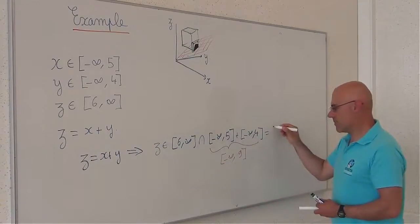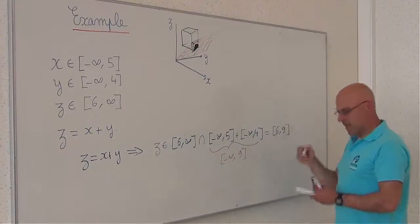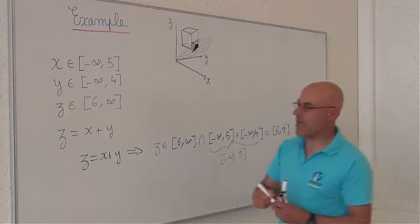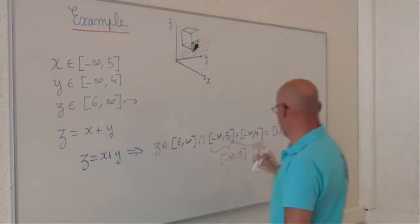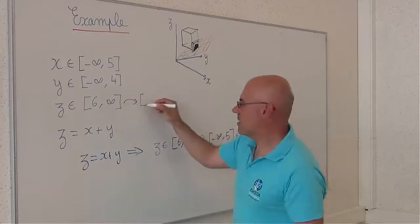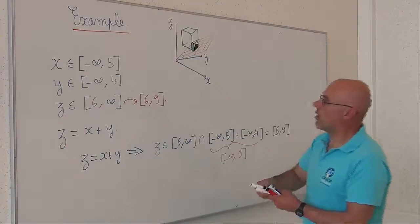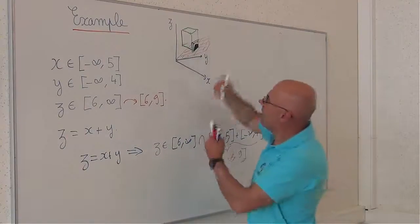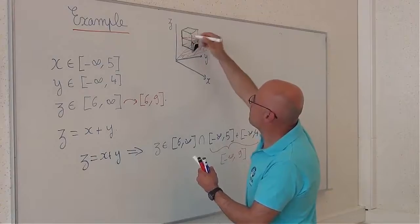It means that I was able to contract this interval into 6, 9. Or equivalently, I made this contraction. I remove this.